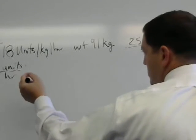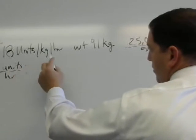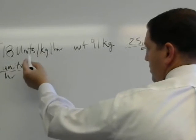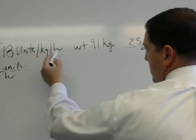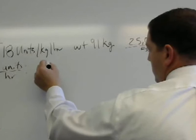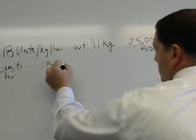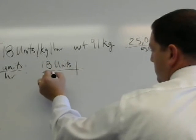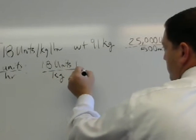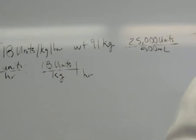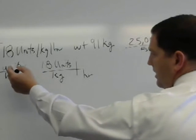So I know that I need units per hour, and this right here already gives me the units I need, units per hour. So I'm going to start out by putting my 18 units per kilogram per hour.